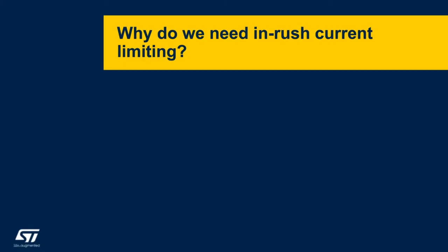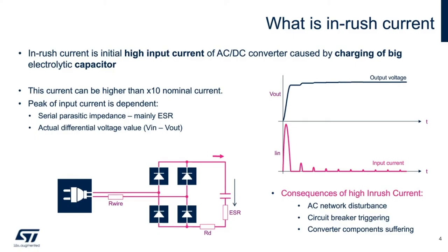So first, why do we need to implement inrush current limiting? Picture you have a home appliance that is powered down with no energy stored in its internal power supply. What happens when you plug that device into the wall? Depending on the size of the power supply, or more specifically the bulk capacitance found internally, you can get a huge spike of energy in the form of inrush current that goes to charge up the front-end electronics of the power supply. You can see how that current waveform can look when flowing through a rectified bridge based on the graphics here.